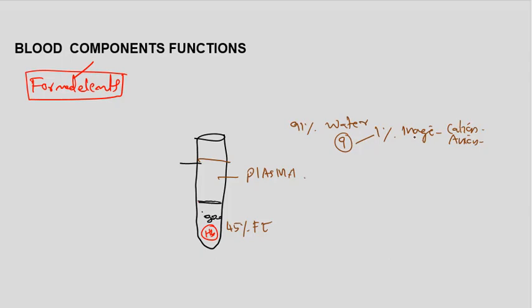Plasma contains inorganic substances, carbohydrates like sugar, vitamins, fats, waste materials such as urea, uric acid, and creatinine, as well as neurotransmitters and hormones.